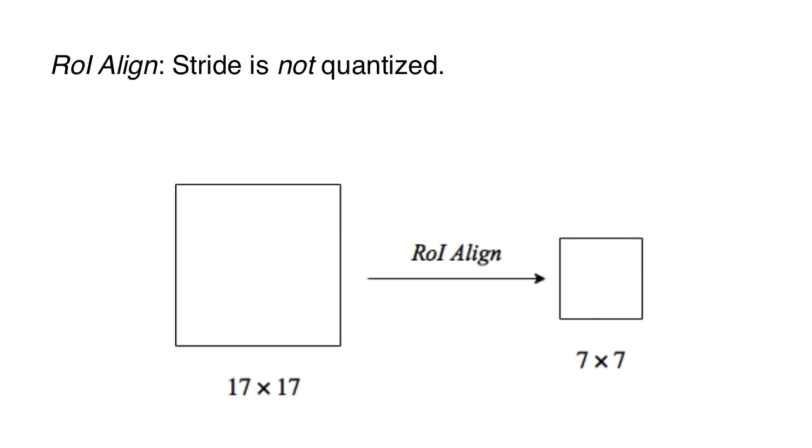To address this problem, ROI align is used. No quantization takes place. So in the case of the 17 x 17 input region, we consider a 2.42 stride as it is.